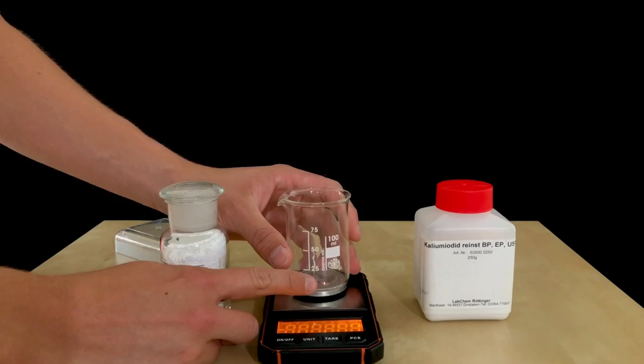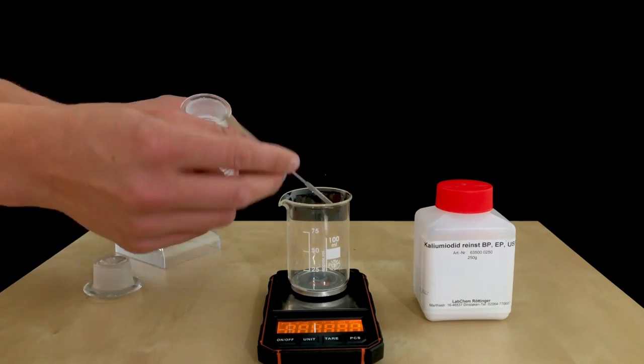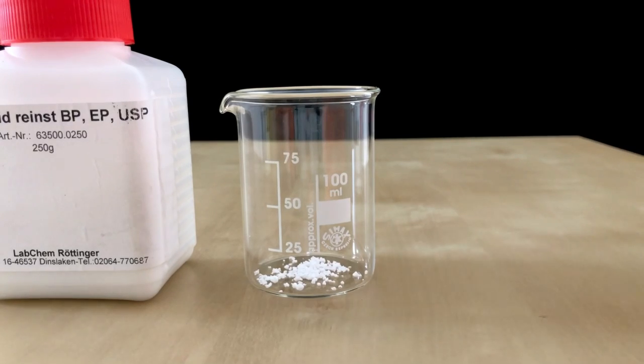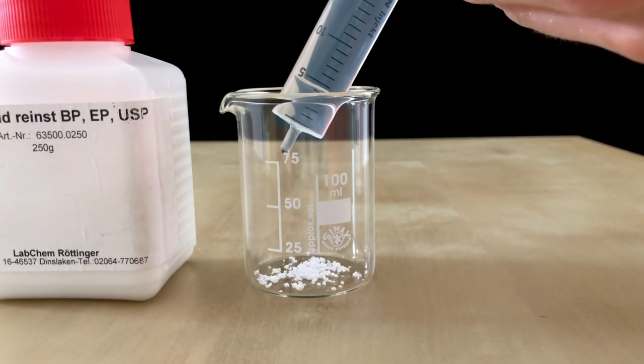We decided to start off by weighing out the 0.17 grams of bismuth oxynitrate. The next goal is to dissolve the bismuth oxynitrate in a solution of glacial acetic acid.